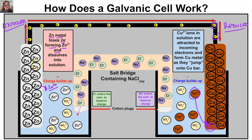Remembering "anox and red cat" from an earlier video: our zinc here is our anode — this is the point at which oxidation is taking place. And our copper metal over here is going to be our cathode — this is the place where reduction is taking place.